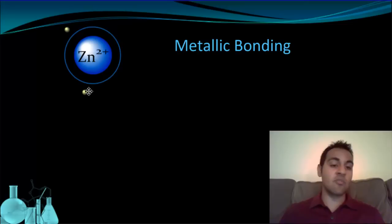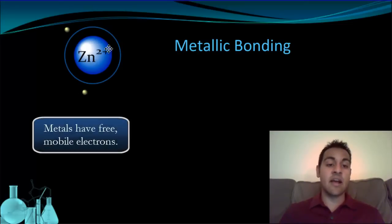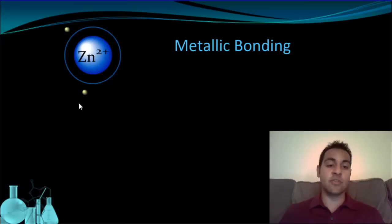Electrons are free to move around. They're not stuck around this particular nucleus. And we have a zinc ion and then free floating negative electrons. So a zinc 2+ and two negative electrons floating around. This is for a single atom.